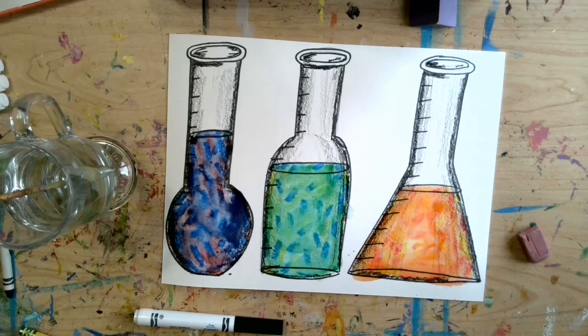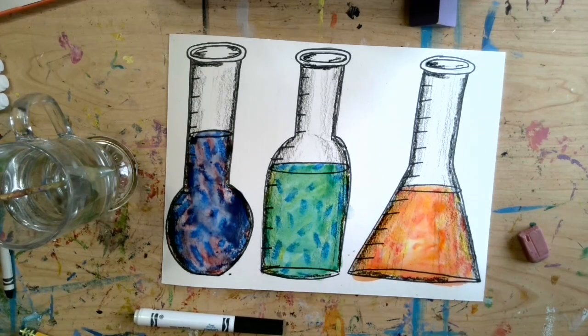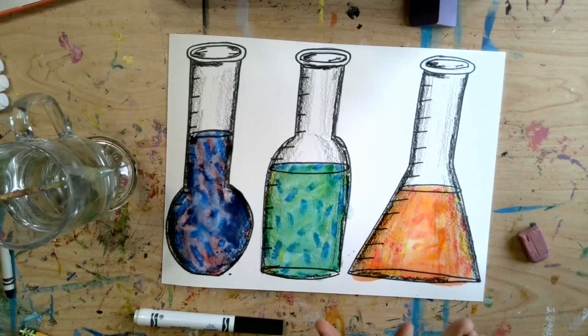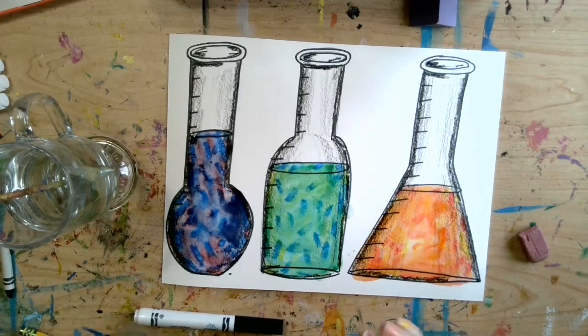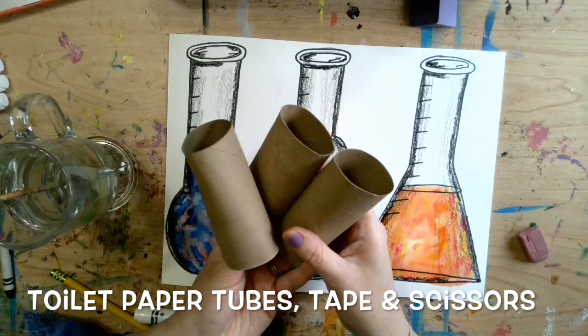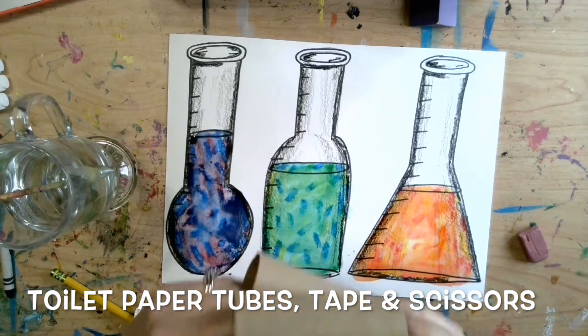Now we are going to take this one step further. And we are going to create or take our forms and make them stand up. So if you want to do that, you need to go and find some toilet paper tubes and some tape or glue and a pair of scissors.